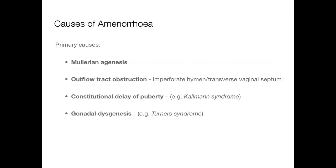Talking about common things, let's talk about causes. The causes can be either primary causes or secondary causes, and really you're going to divide these by the age of the patient. Primary causes include mullerian agenesis, which is a congenital cause — the absence of the uterus. Obviously you're not going to get a period if you don't have your uterus.